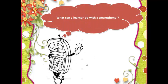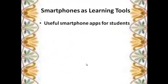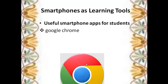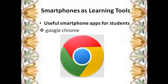So what can a learner do with a smartphone? Smartphone is a learning tool useful for students. For example, Google Chrome. Among all Android browsers, Google Chrome is the best because of its user interface. If a student has a problem with a website, they can just check 'request desktop site' to view the site the way it appears on desktop. This feature makes Chrome the best.